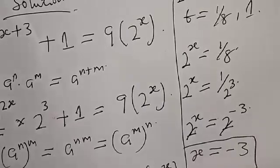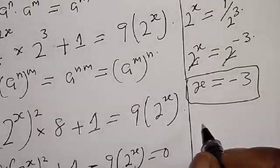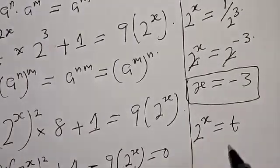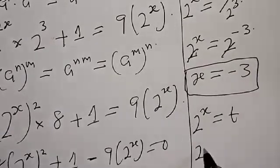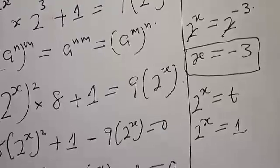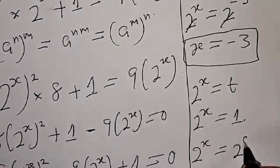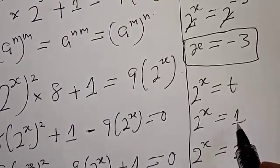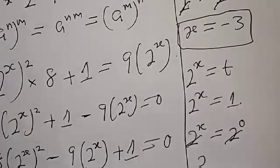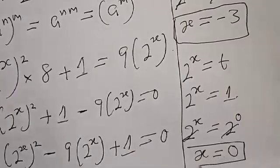That is the first value of s. Also, for t equals 1: 2 raised to power s equals 1. Since any number raised to power 0 is 1, we have 2 raised to power s equals 2 raised to power 0. They have the same base, so s equals 0. That is the second value of s.